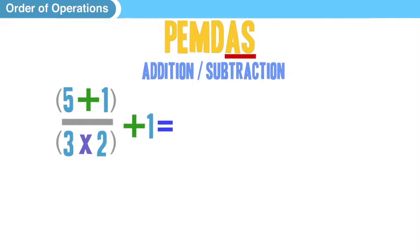First thing is we have to do what's inside the parentheses first, because that's our first step. So we do 5 plus 1 on top, which is 6. And then on bottom, we have 3 times 2 in parentheses, so that's also 6.